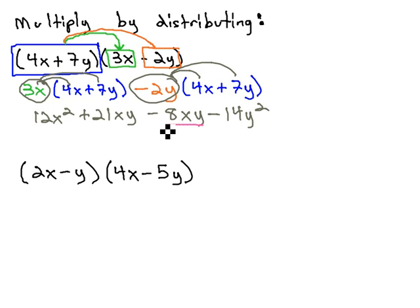We are then allowed to combine like terms to give us, in the middle here, the like terms xy, 21xy and -8xy, to give us 12x² plus 21 minus 8 is 13xy minus 14y² and we have our solution.